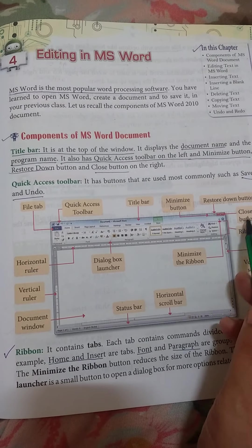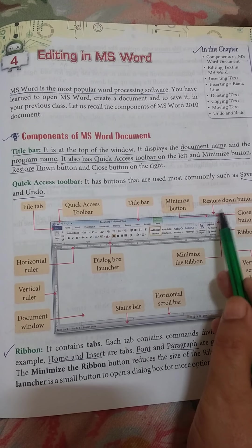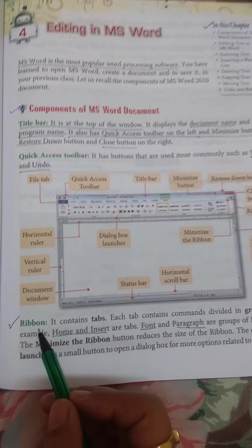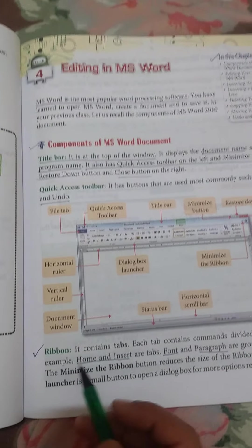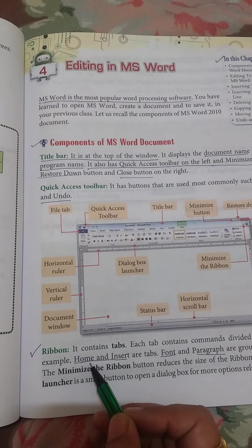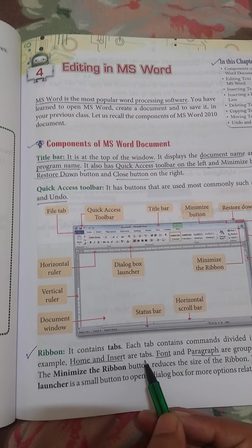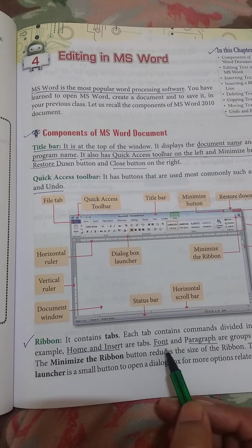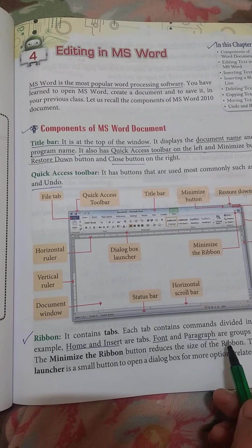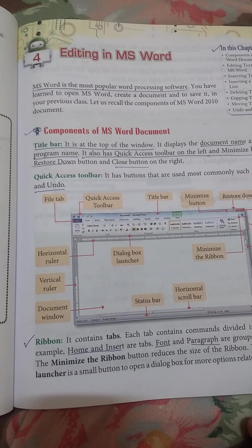These are close, minimize and restore buttons. Next is the ribbon. Ribbon has home and insert tabs. Font and paragraphs are also in home tab.